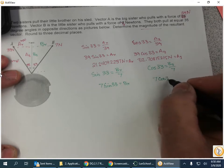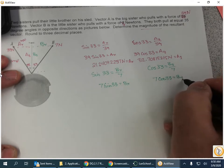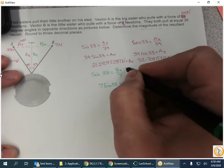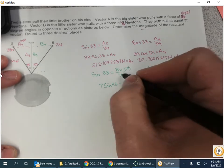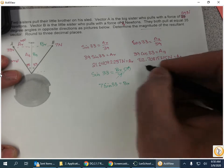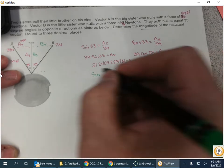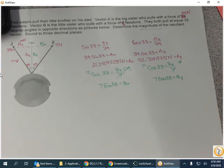And cosine of 33 is our By over 7, so 7 times the cosine of 33 is By. Again, I'm just multiplying by 7 on both sides, which cancels those out.